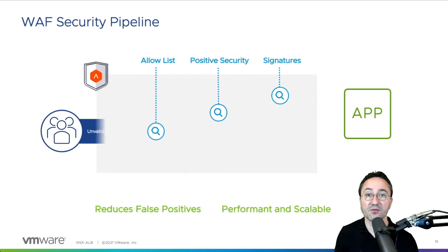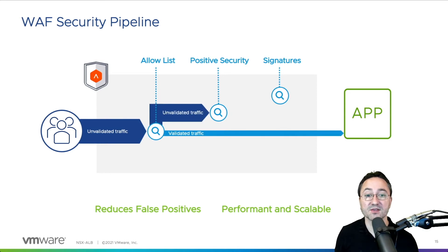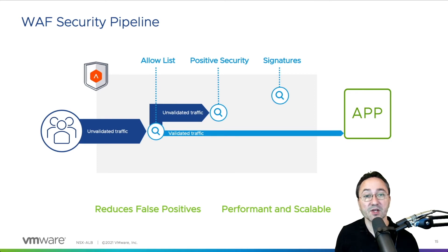Let's look at the three RAV modules and how they work together. The allow list, as the first step in the security pipeline, will validate traffic and send it to the application. Anything that is not yet validated will be processed by the positive security or the signatures, which we will explain in a specific how-to video.